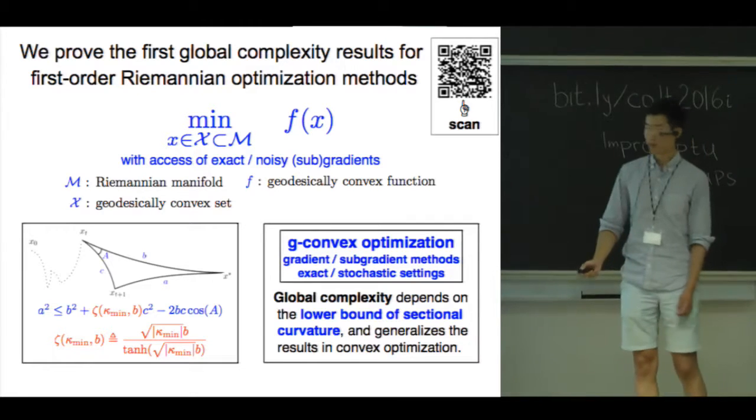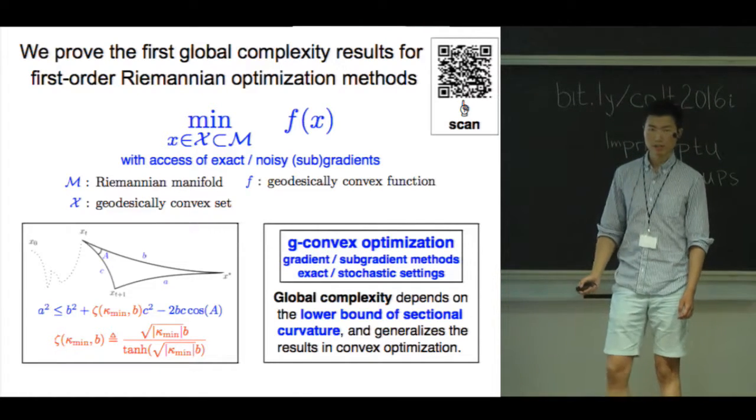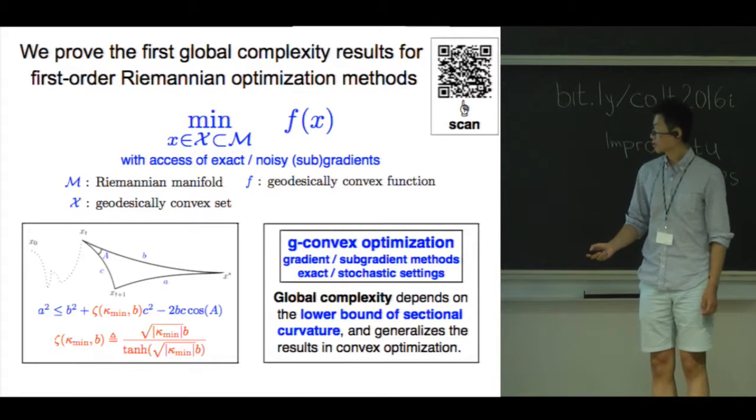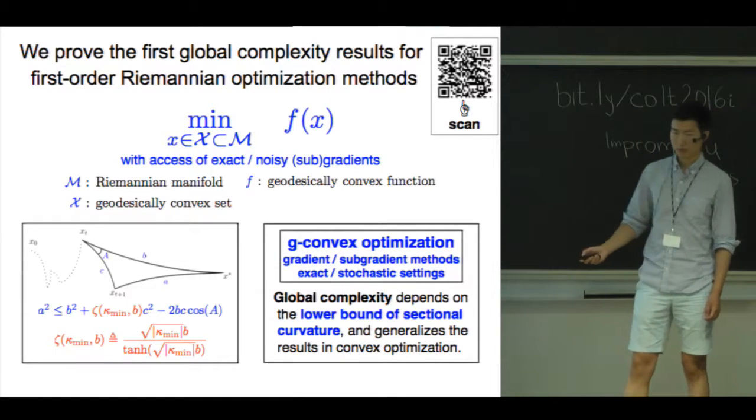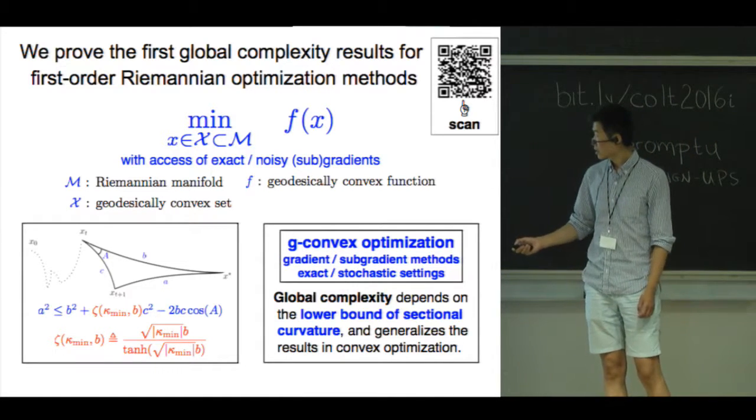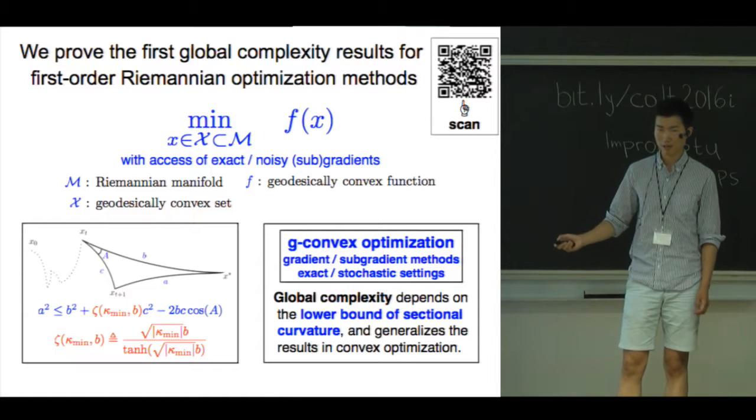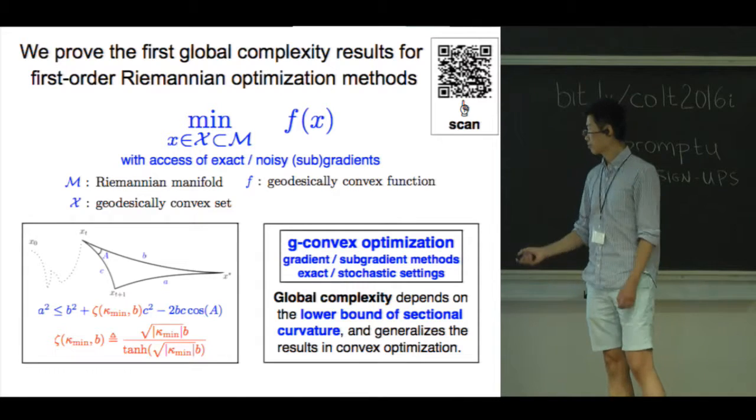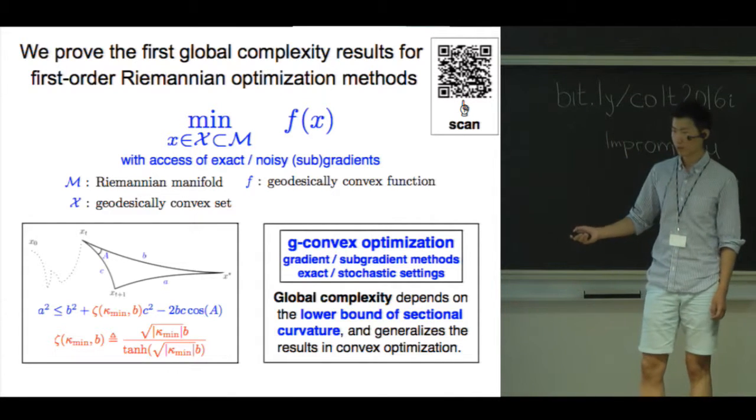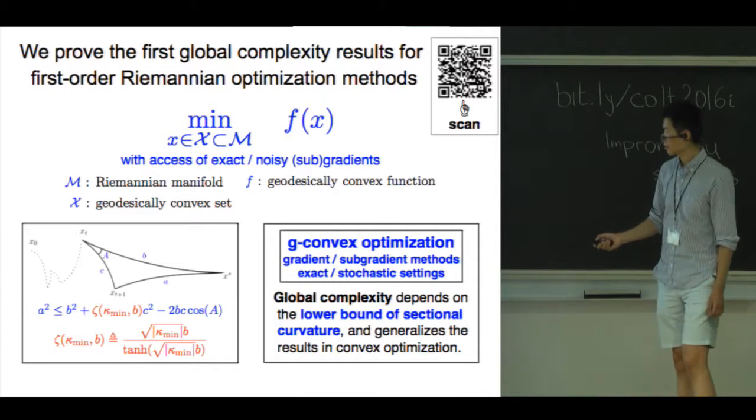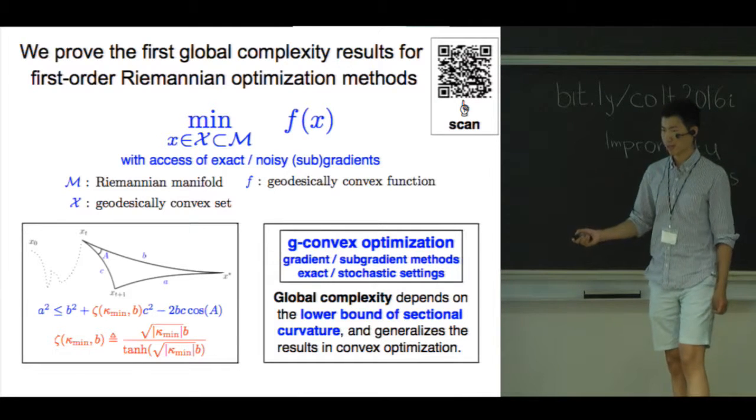To summarize, we study first order geodesically convex optimization on Riemannian manifolds. Towards this end, we proved a square distance lemma which generalizes the Euclidean law of cosines, and we use this lemma to prove the first global complexity results on Riemannian manifolds for Riemannian optimization algorithms.